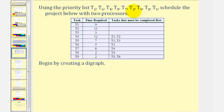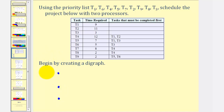We want to use the given priority list to create a schedule using two processors. Notice how we're given information in a table this time. Let's begin by creating a digraph. Looking at the table, notice how tasks one, two, and three don't have any prerequisite tasks, so we'll start with these three tasks by creating three vertices. This vertex represents task one, this represents task two, and this represents task three.